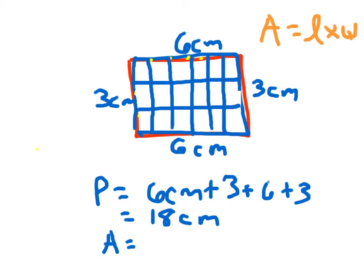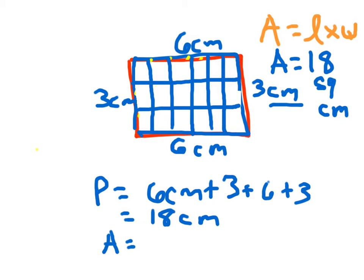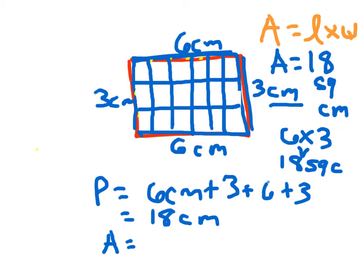Now if we counted up these number of squares that are here: 1, 2, 3, 4, 5, 6, 7, 8, 9, 10, 11, 12, 13, 14, 15, 16, 17, 18. Then we have our answer for this area. Area is equal to 18 of those squares. And since this unit is centimeters, we'll call that square centimeters. Area is equal to 18 square centimeters. It would have been much easier just to multiply 6 by 3 to figure out what's inside of that figure — 6 times 3 being 18 square centimeters. We will need to show our work when we are figuring out that area.